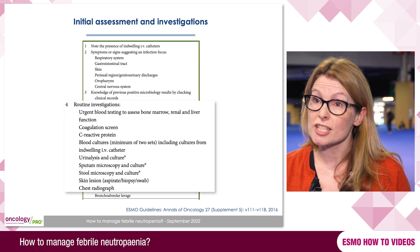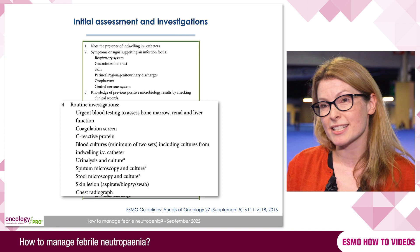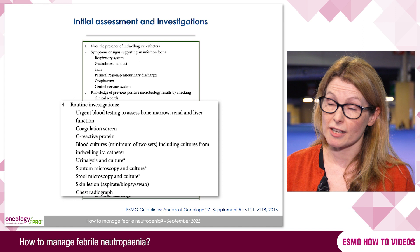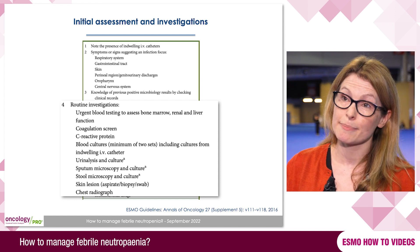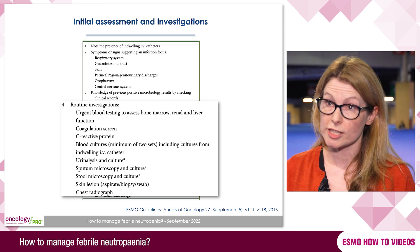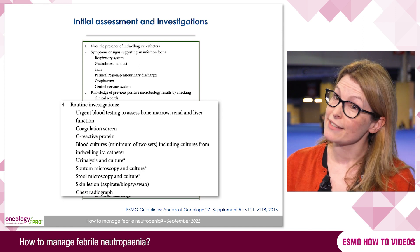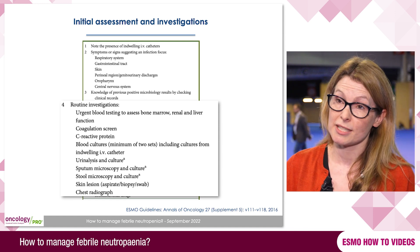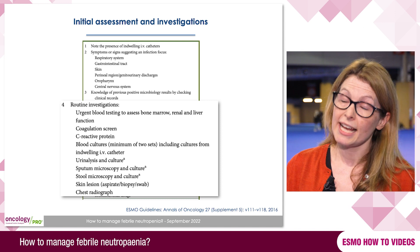Immediate investigations include a broad panel of blood tests: full blood count, kidney and renal function, coagulation, and CRP to check for markers of inflammation. Two sets of blood cultures should be taken — from any indwelling lines and peripheral blood. Urine cultures should be taken even in patients without symptoms, and other cultures directed by symptoms such as sputum, stool, or skin swabs. Most patients also require a chest x-ray. Crucially, patients must receive the first dose of IV antibiotics as soon as blood cultures have been taken — you do not wait for investigation results.